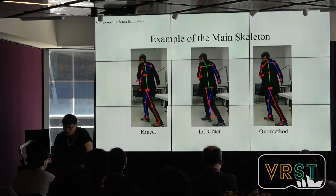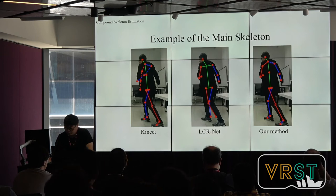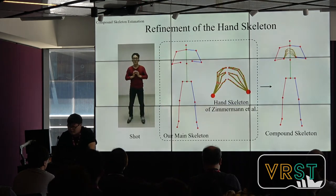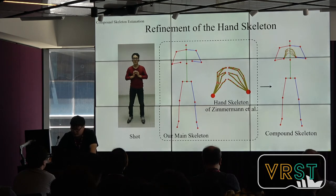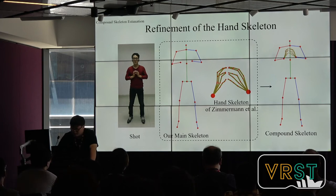This is an example result of the main skeleton refinement. The positions of two key points from Kinect are wrong. We can see that LCI Knight successfully corrects the wrong joints from Kinect. For the hand skeletons, we take the method from Zimmermann et al., Hand3D, to estimate hand pose and then embed them into the refined main skeleton. Finally, we obtain a correct full body skeleton with hand details.